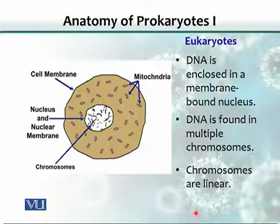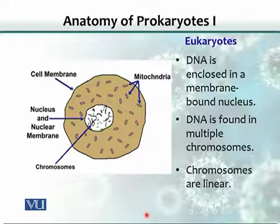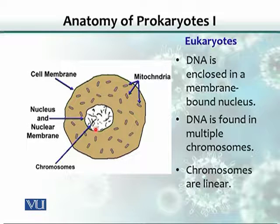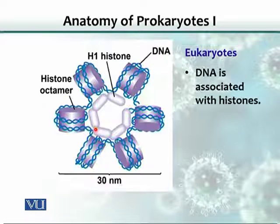If we look at the eukaryotic cells and compare them with prokaryotes, the DNA is enclosed in a membrane — a very well-defined membrane not present in prokaryotes. DNA is found in multiple chromosomes. In prokaryotes, there is mostly only one chromosome, but in eukaryotic cells there are multiple chromosomes. Also, the chromosome in bacteria was circular, but here they are linear — like threads. Eukaryotic DNA is also associated with histones.